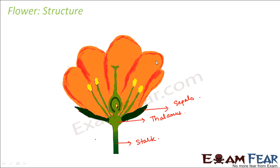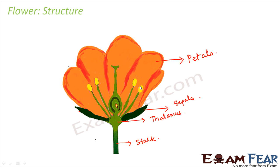Then you have the colored parts of the flower which give it red, yellow, pink, or green color — these colored parts are called the petals. Some plants have 4 petals, some have 5 petals, some have 9 petals, some have a lot of petals. It depends from flower to flower, but these are the petals.